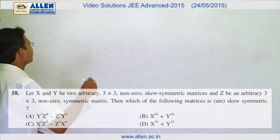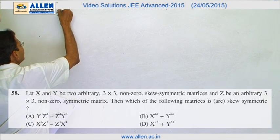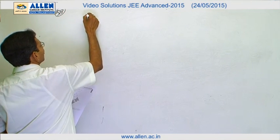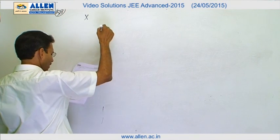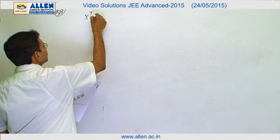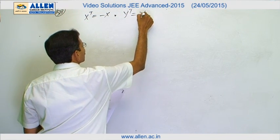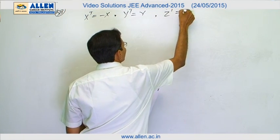Question number 58. We have two kinds of matrices: symmetric and skew symmetric. X is given as a skew symmetric matrix. This means X transpose is minus X and Y transpose is also minus Y, whereas Z is a symmetric matrix.